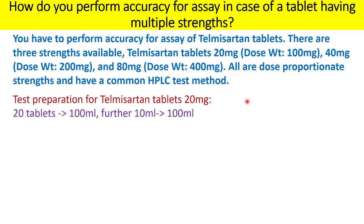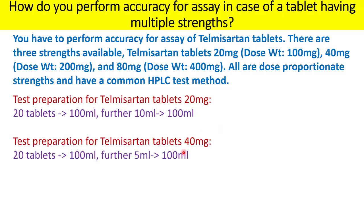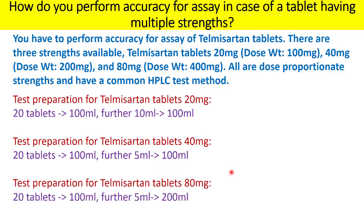Let us now understand the exact preparation for each strength. For Telmisartan 20 mg tablets, take 20 tablets, dissolve into a 100 ml volumetric flask, dilute with diluent, then pipette out 10 ml of the resultant solution and dilute to 100 ml. For Telmisartan 40 mg, take 20 tablets, dilute to 100 ml, then further dilute 5 ml to 100 ml.